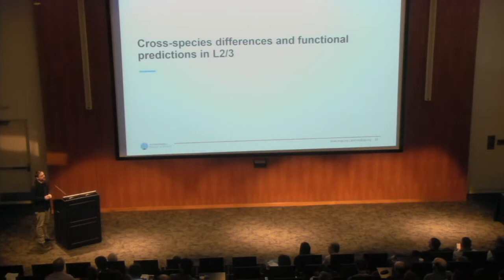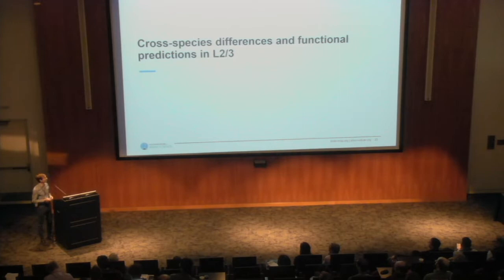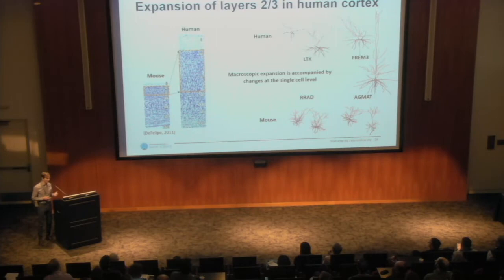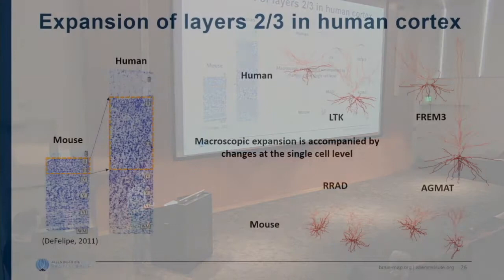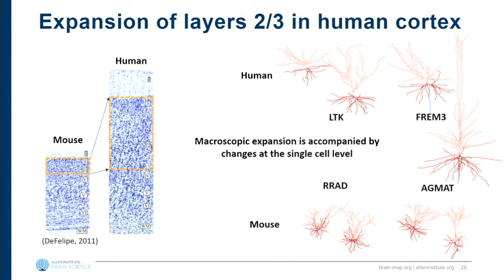Now I'll tell you about computational modeling to gain insight into how physiological differences translate into differences in input-output properties. One of the more prominent gross anatomical differences between primate and rodent cortex is the expansion of layers 2-3 — can we see that anatomical difference reflected at the single cell level? The answer is yes. Using the patch protocol pipeline, we have a couple hundred cells on both human and mouse sides with morphology, electrophysiology, and transcriptomics. While the differences in layer 2-3 aren't super obvious from transcriptomics, the cross-species mapping is fuzzy — all excitatory cells map to one homologous type.